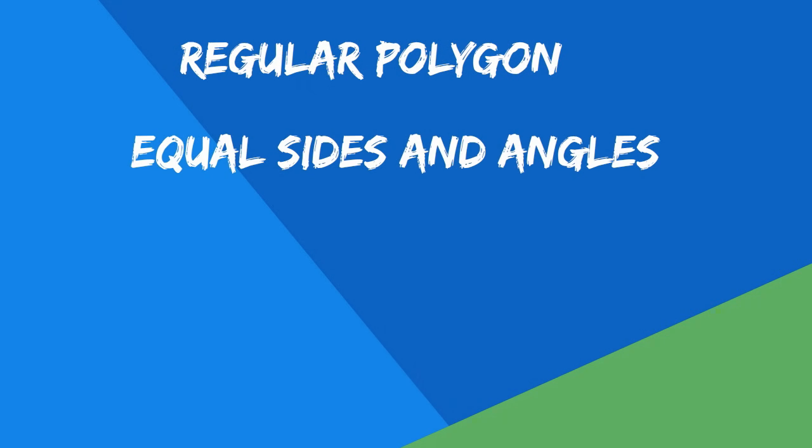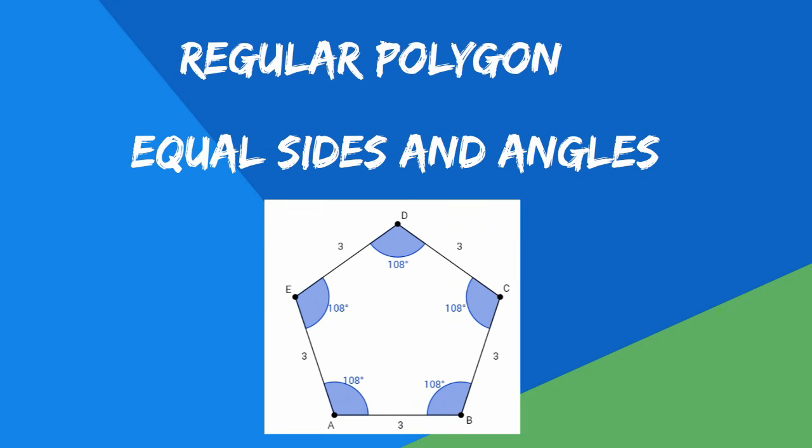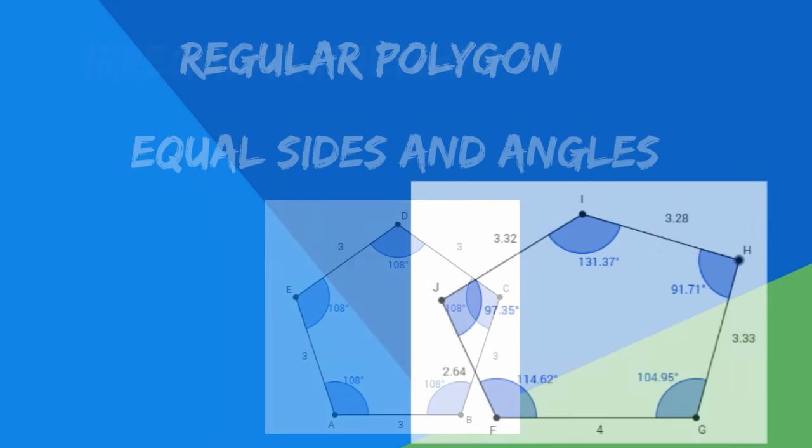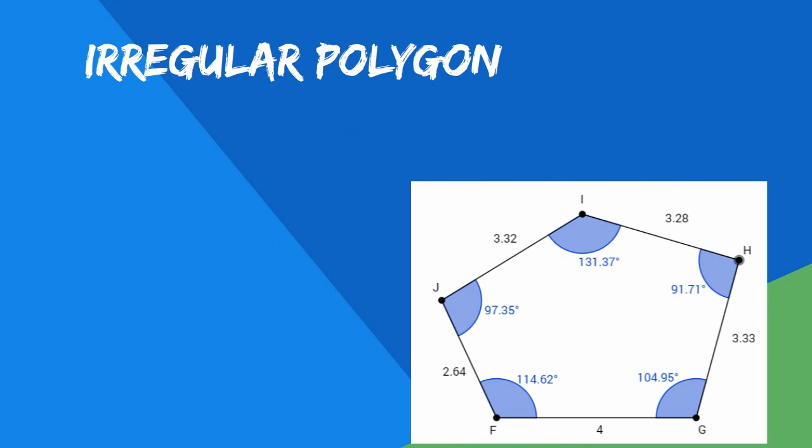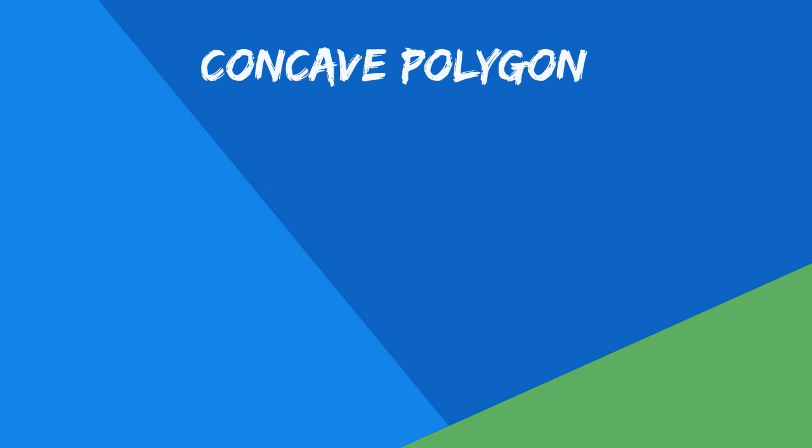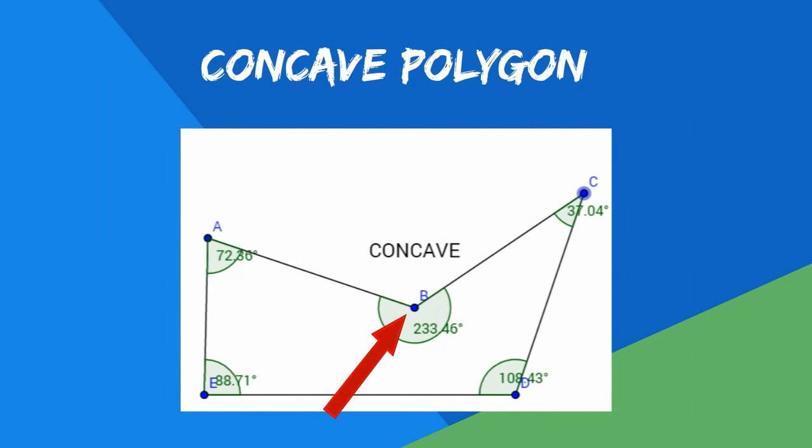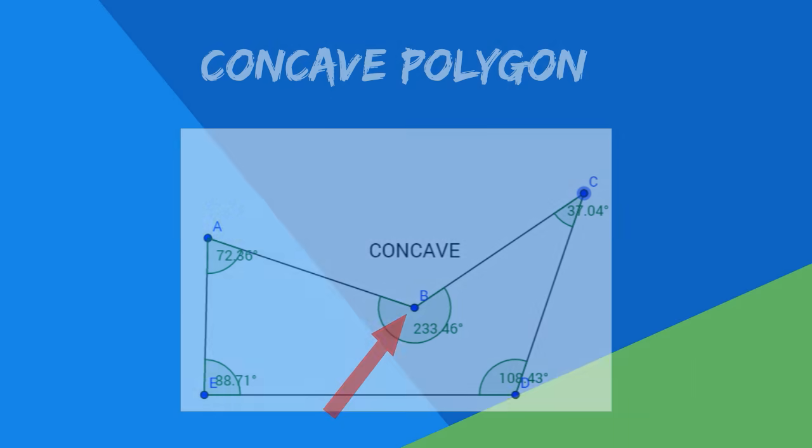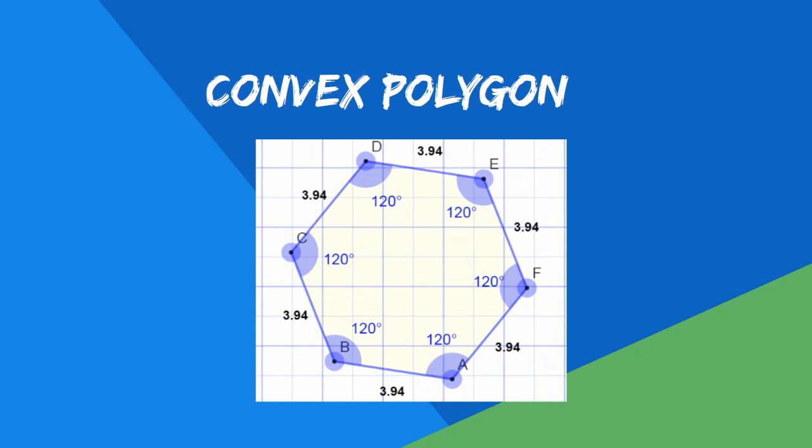There are several types of polygons. A regular polygon has equal lines and angles. An irregular polygon does not have equal lines and angles. A concave polygon has one angle greater than 180 degrees. A convex polygon does not have any internal angles greater than 180 degrees.